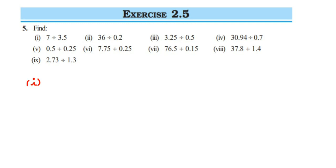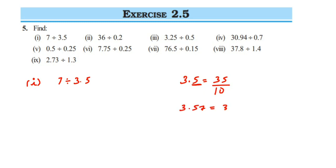The first question: we have a whole number divided by a decimal number — 7 divided by 3.5. In your lower classes you learned how to convert a decimal into a fraction. So 3.5 is equal to 35 upon 10, because there is one digit after the decimal, giving 10 in the denominator. Similarly, 3.57 equals 357 upon 100, because there are two digits after the decimal.